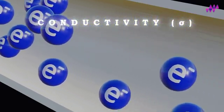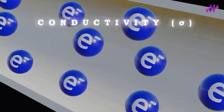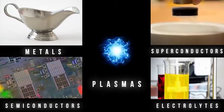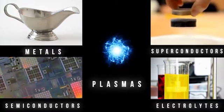The material or object that allows electric current to flow is called a conductor. Metals, electrolytes, superconductors, semiconductors, and plasmas are all examples of conductors.